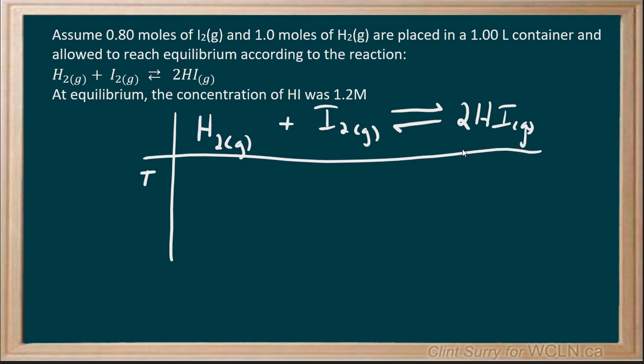The first step of an ICE table is the initial conditions. We're given moles but we also have the volume. Fortunately, this is an easy calculation: 0.80 moles of iodine divided by 1 liter gives us 0.80 molar iodine gas. The hydrogen comes out to 1.0 molar hydrogen gas, and we do not have any hydrogen iodide to begin with.